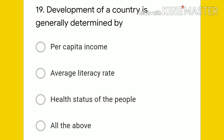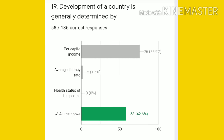Question 19: development of a country is generally determined by — per capita income, average literacy rate, health status of people, or all of the above? The answer is all of the above. 58 students gave the right answer, but 76 students chose only per capita income.